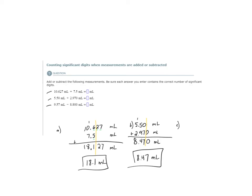Let's look at c. We have 9.57 milliliters minus 8.800 milliliters. Now even though this is subtraction, we still follow the same rule.